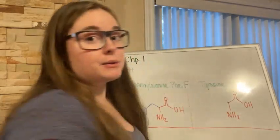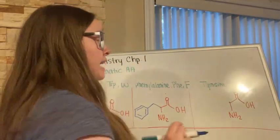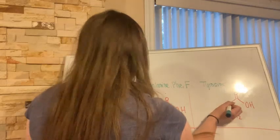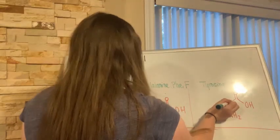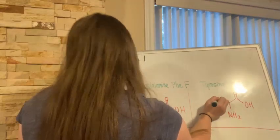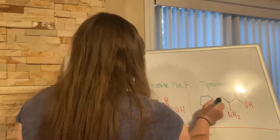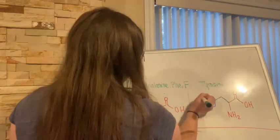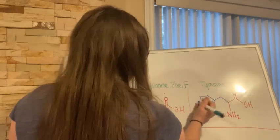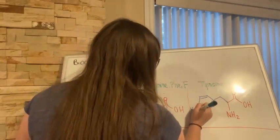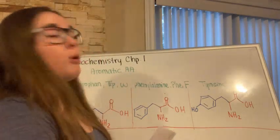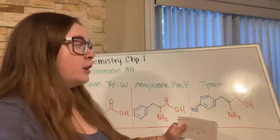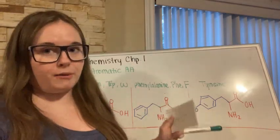Finally we have tyrosine. Tyrosine has an aromatic ring with an OH group attached. The OH group means this group is polar, so tyrosine is the only polar aromatic amino acid.